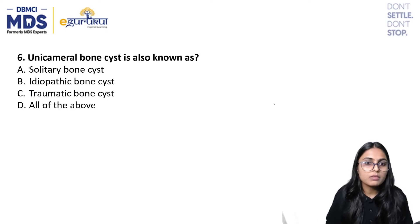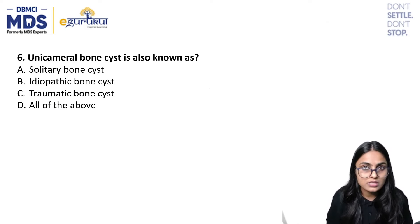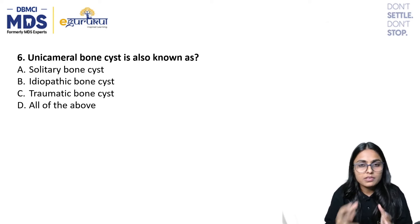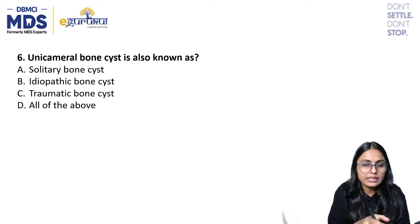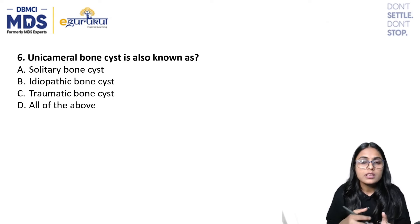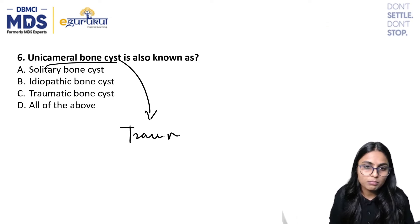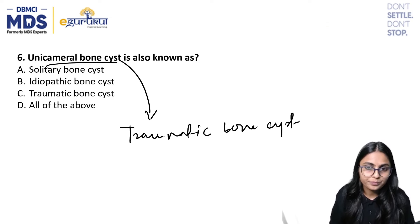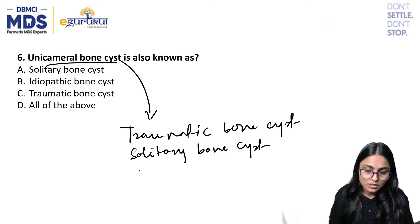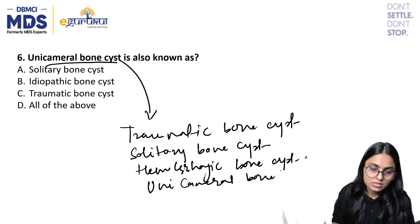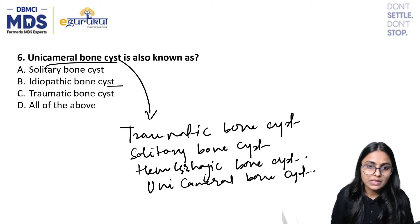Question six: the unicameral bone cyst is also known as — it is important to know the synonyms of each condition. Unicameral bone cyst is a synonym for traumatic bone cyst. Write down the synonyms: traumatic bone cyst is also called solitary bone cyst, hemorrhagic bone cyst, unicameral bone cyst, and idiopathic bone cyst. Idiopathic means the reason is unknown, though the most discussed cause of traumatic bone cyst is trauma.